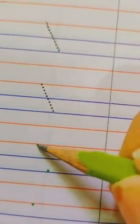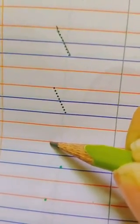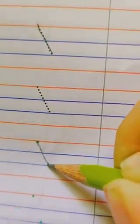Now we will draw the slanting line with the help of only two dots. Keep your pencil here on this first dot and join it with the second dot. Like this.